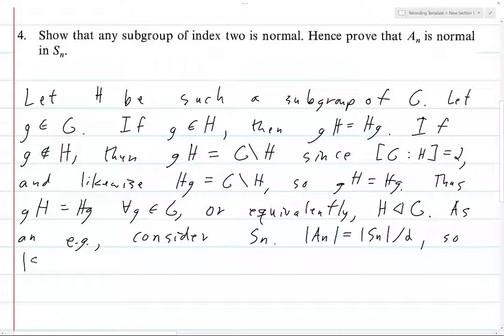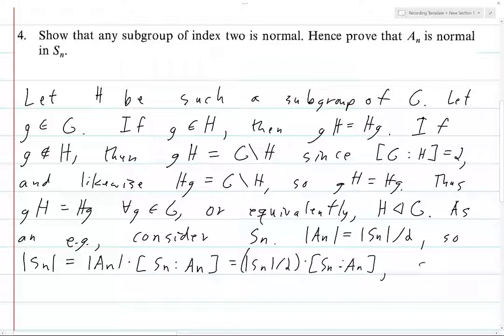So what does that tell us? We use Lagrange's theorem to tell us that, well, A_n is obviously a subgroup. And so the order of S_n is equal to the order of A_n times the index of A_n in S_n. But we have this formula for the order of A_n. It's just order of S_n over 2. Multiply that by the index. So then when you multiply both sides of this equation by 2 over the order of S_n, then we get 2 equals this index. And hence, by this exercise, the result that we just proved, we know that A_n is normal in S_n. So, yeah, there we go. This completes our proof.